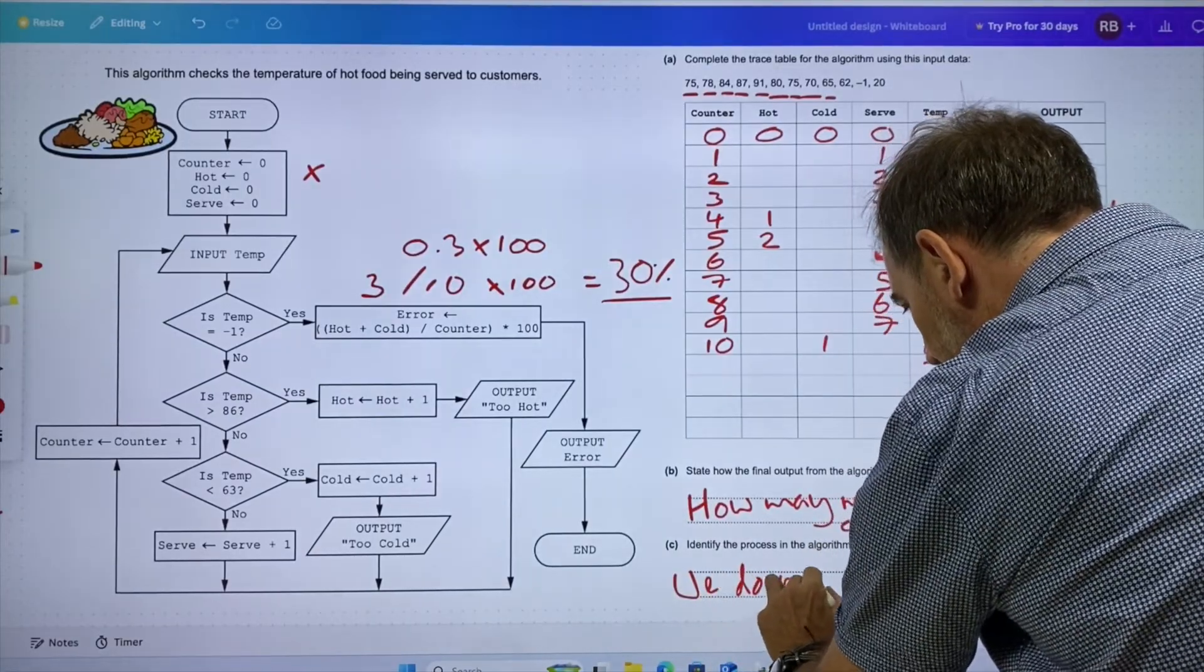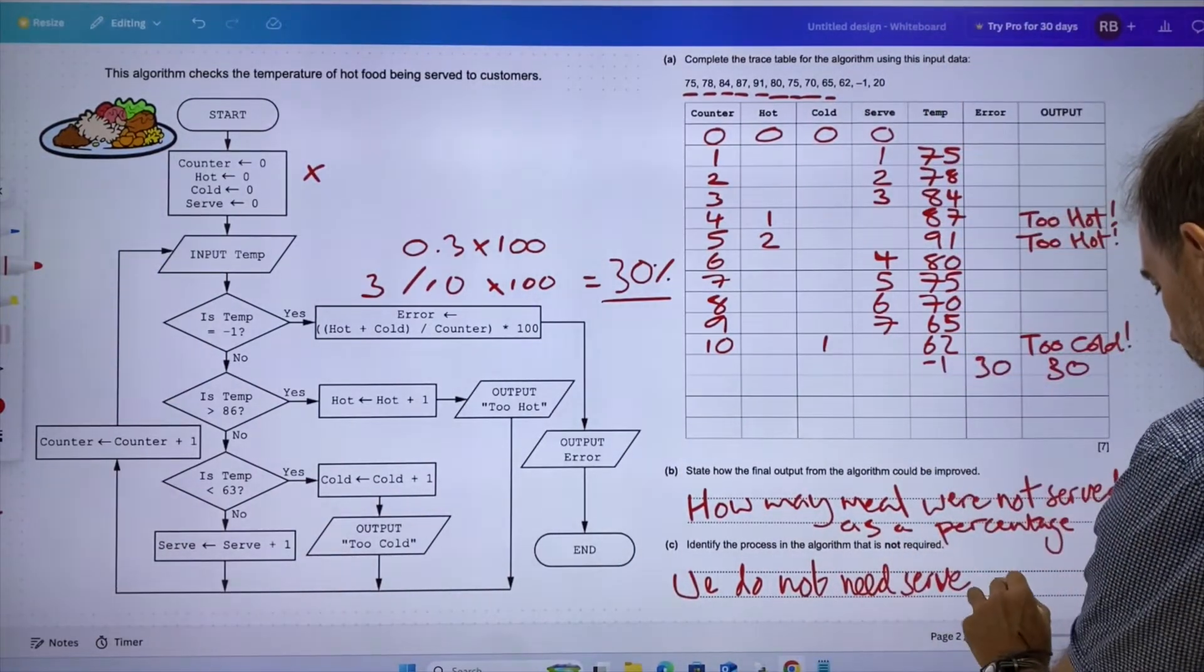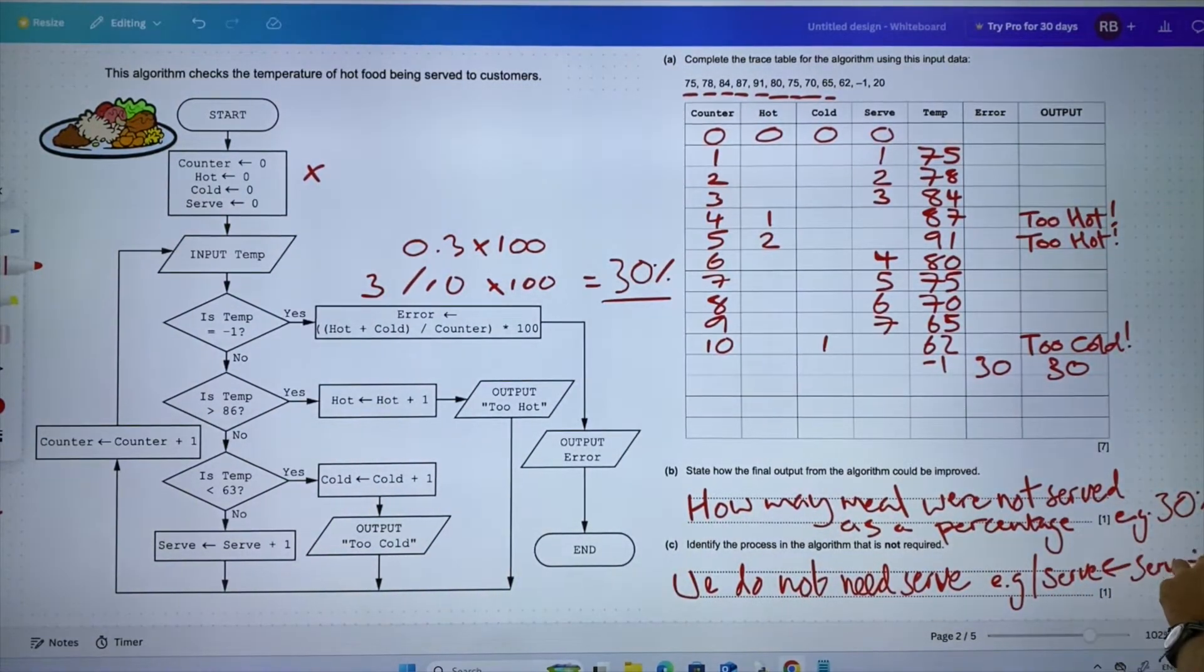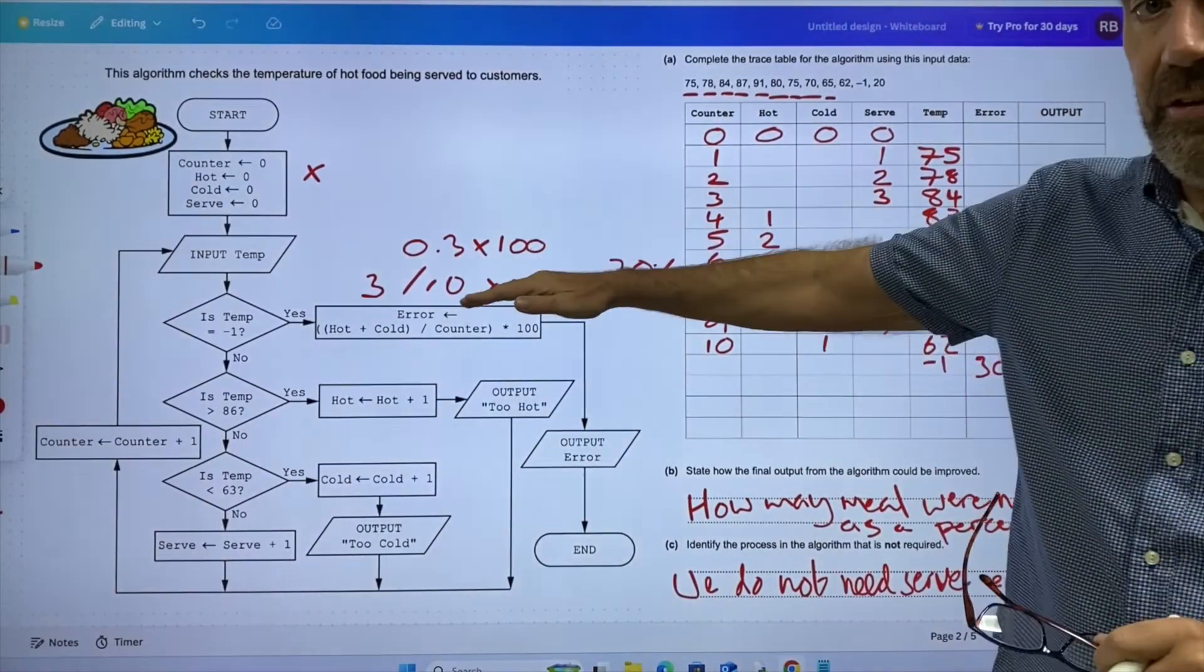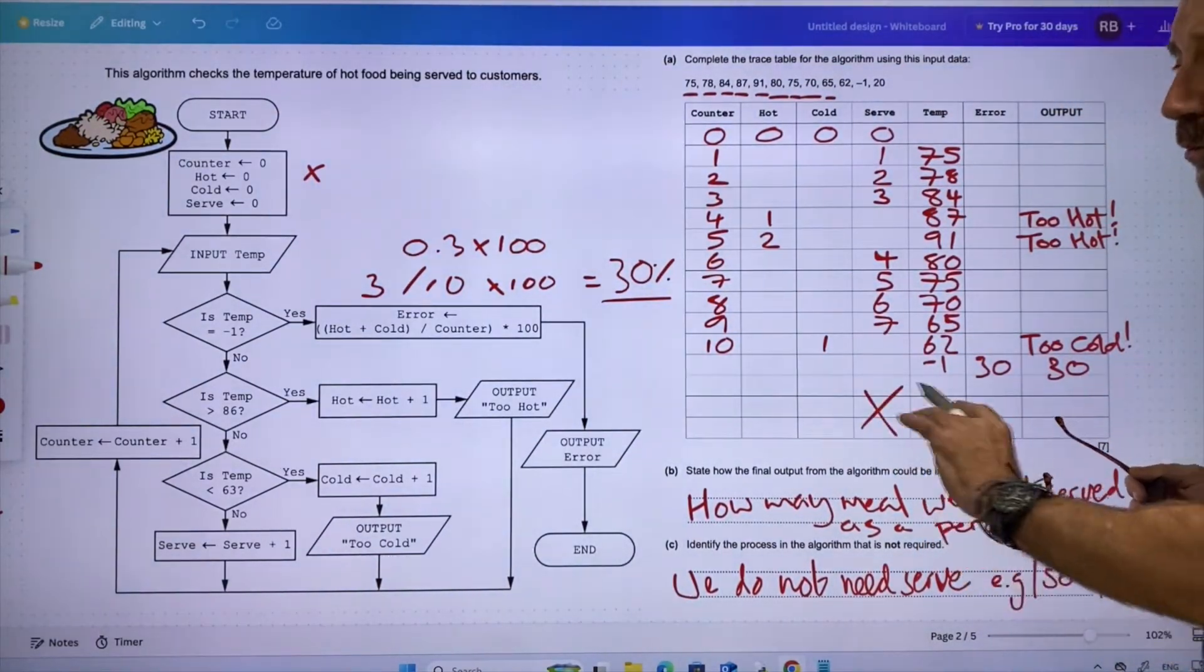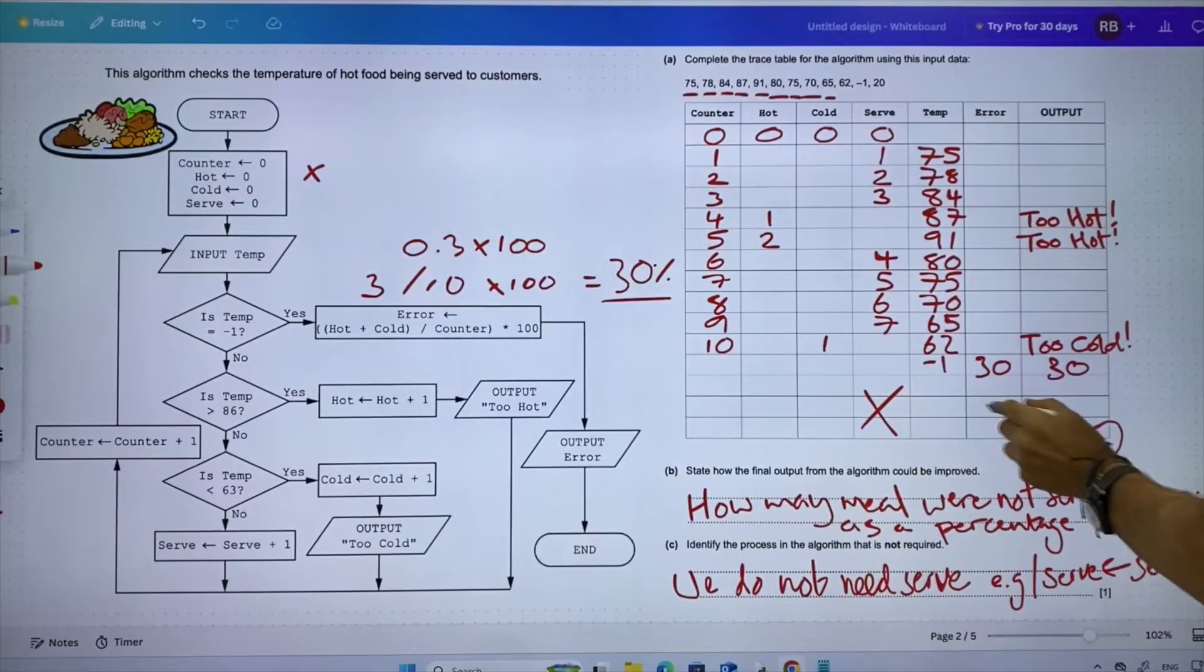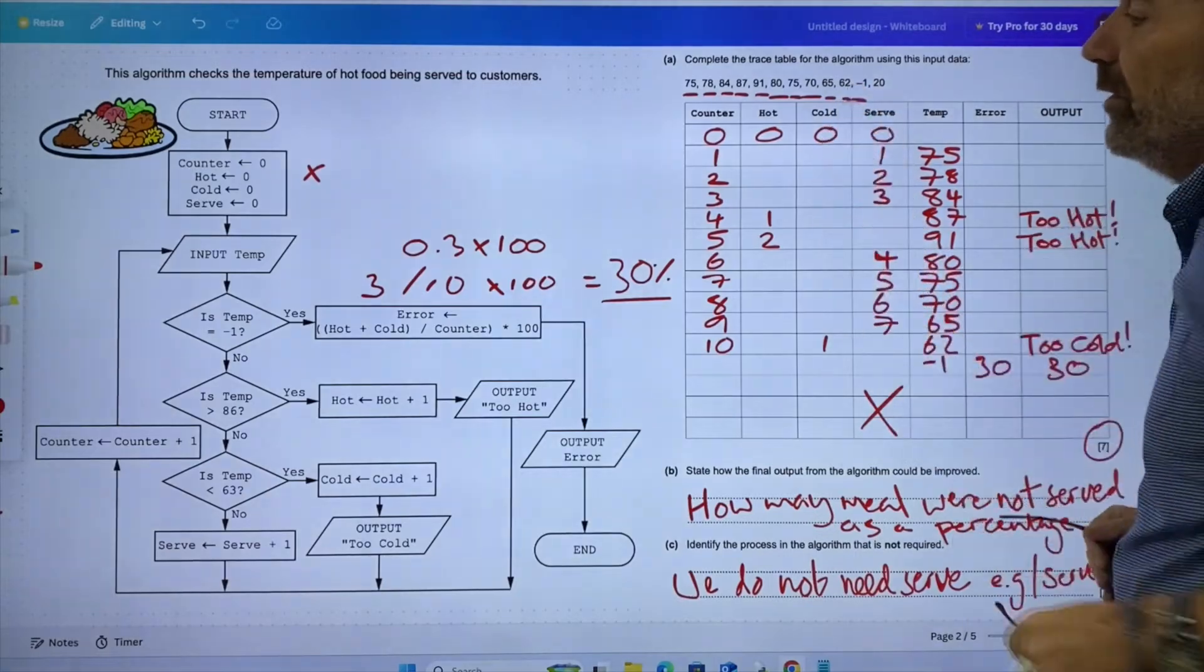For example, I'll put the process box on 'serve has been assigned serve plus one.' We don't need that because we can work that out from this. So we really don't need that column at all. I'd cross that out. Don't put that on because you might get one, two, three, four, five, six, seven—so seven marks for each of the columns. And that's it. Take those off.